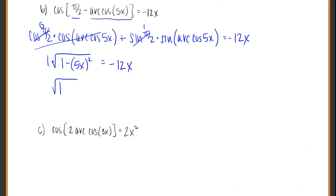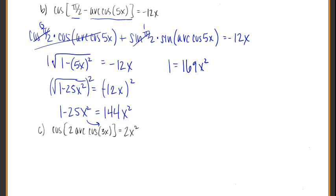So the square root of 1 minus 25x squared is equal to a negative 12x. And like above, let's square both sides. So I get 1 minus 25x squared is equal to 144x squared. Let's group our x squareds together. So 1 is equal to 169x squared.